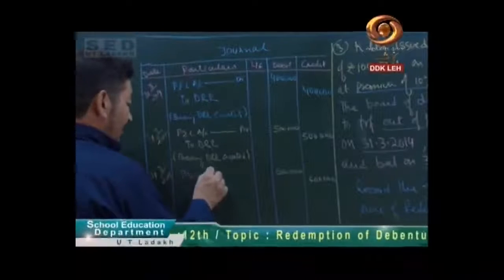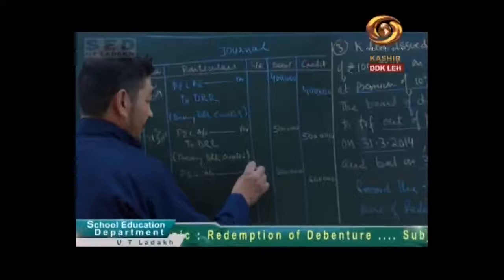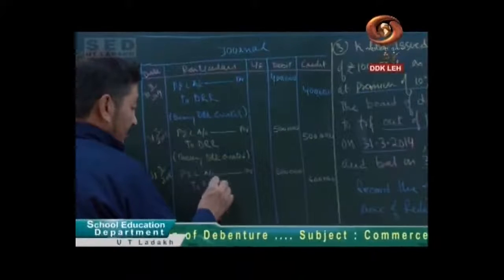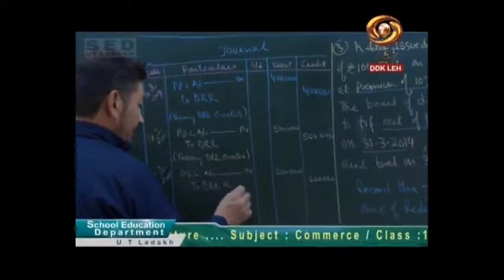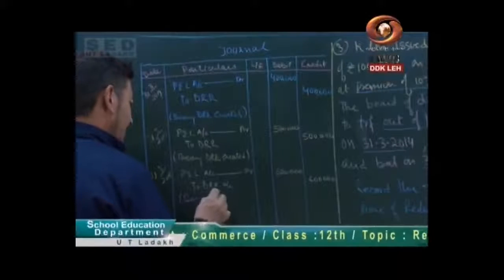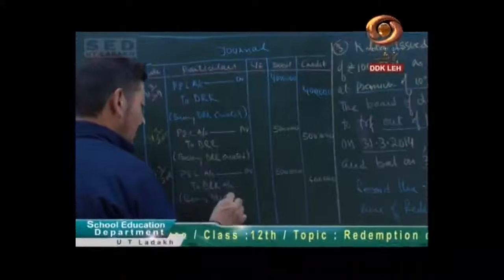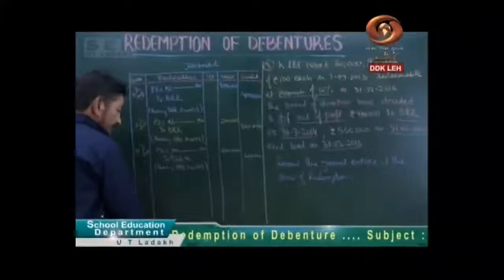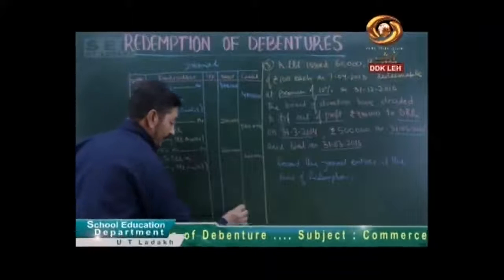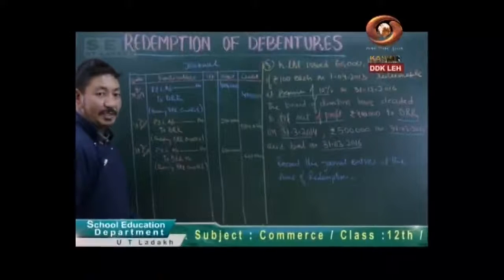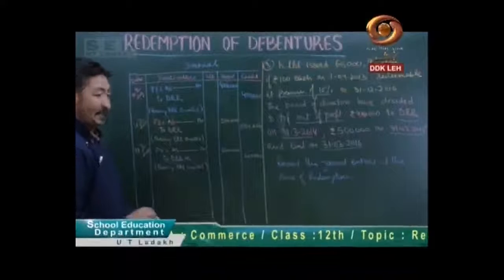So the same entry: Profit and Loss account debited to Debenture Redemption Reserve account — 6 lakhs. Being DRR created. Now we have one more entry here. What happened here? 15% which is called Debenture Redemption Investment.